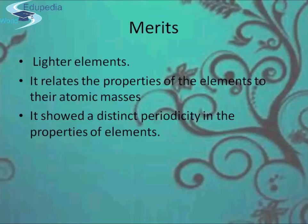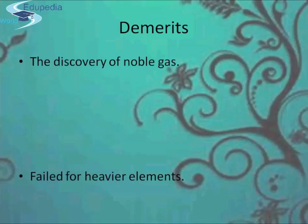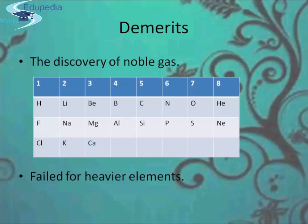Now let's understand the demerits, which led to the generation of a new periodic table. First, after the discovery of noble gases, the idea of octave failed. For example, neon now comes between fluorine and sodium, and argon between chlorine and potassium, thus making the ninth element — not the eighth — show the similar properties. Also, this classification failed for the heavier elements, i.e., those lying beyond calcium. As more and more elements were discovered, they could not be fitted into Newlands' octave.